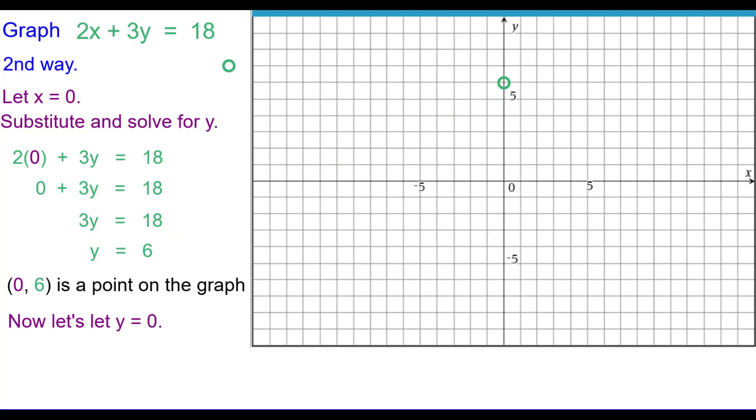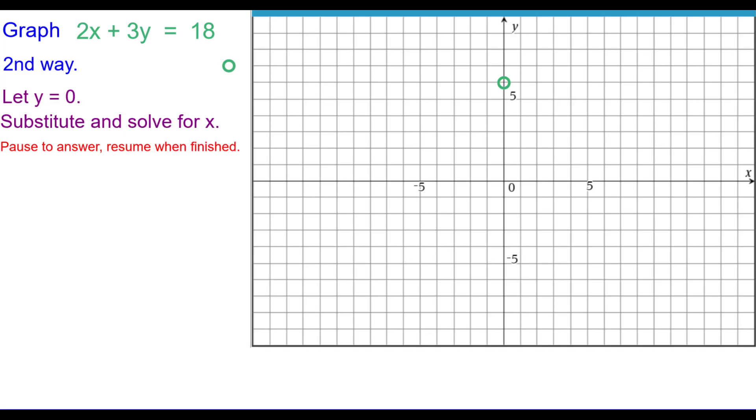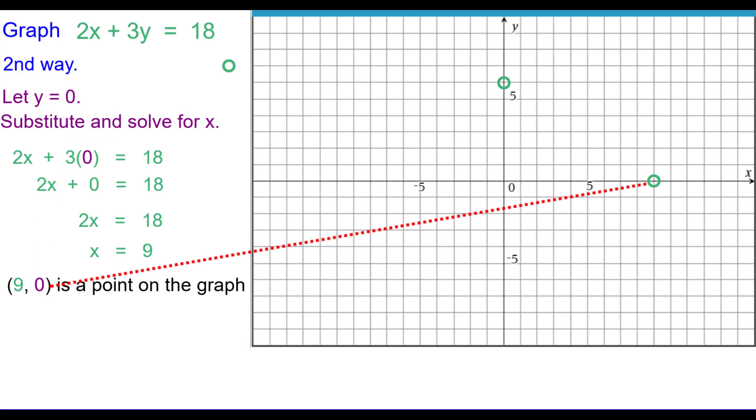Now let's let Y equal 0. Again, we'd like you to substitute and solve for X. Pause to do that and resume when you're finished. So 0 in for Y. 3 times 0 is 0. 2X equals 18. We divide both sides by 2 and X is equal to 9. So plotting point 9 comma 0. We can see that is on the X axis. And since two points determine a unique line, we'll connect those points with a line.